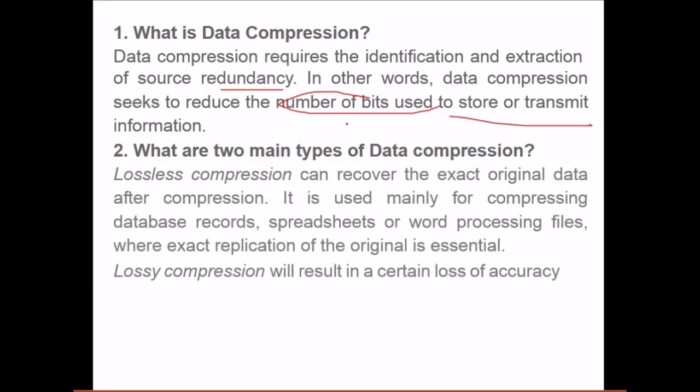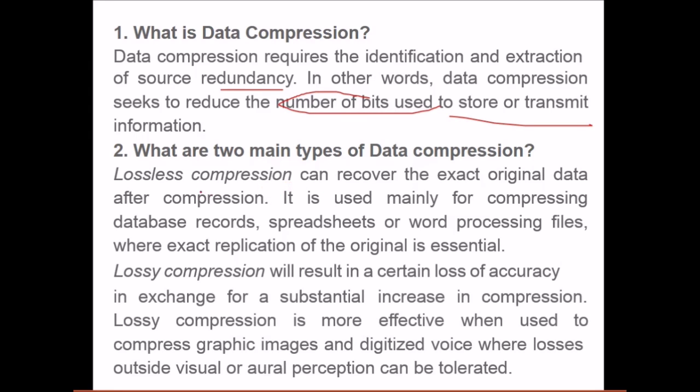What are two types of data compression? There are two types: lossless compression and lossy compression. Lossless compression can recover the exact original data after compression. It is used mainly for compressing database records, spreadsheets, or word processing files where exact replication of the original is essential.